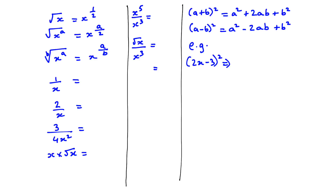If you have x in the denominator, we will always bring it up. For example, 1 over x to the power of 1 can be written as x to the power of negative 1. Similarly, 2 over x becomes 2x to the power of negative 1. For 3 over 4x squared, the numbers don't change their position — only the x in the denominator is brought up — so we get 3/4 x to the power of negative 2.